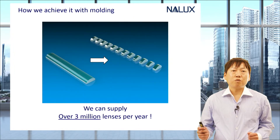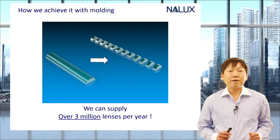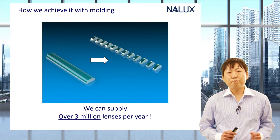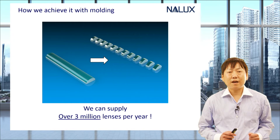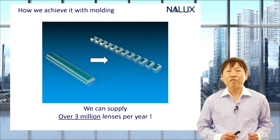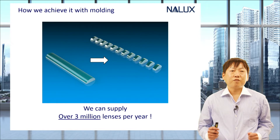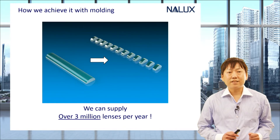I'd like to show a little about the technology development that enables them. By producing a large number of glass cylindrical lenses by molding, the production of acylindrical lenses has become excellent in mass productivity. Since the lenses are molded, they can be mass produced with little variation, and we can provide glass acylindrical lenses at the same price as conventional glass spherical lenses.